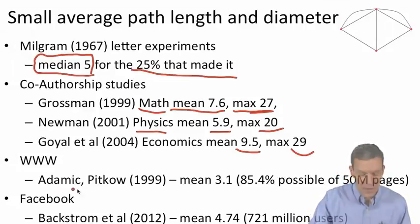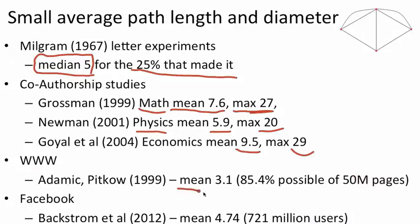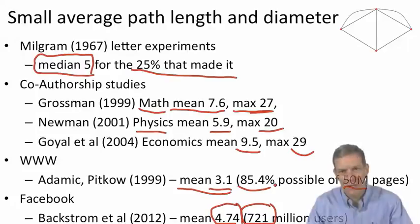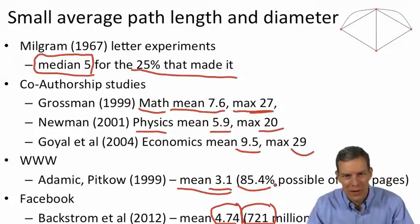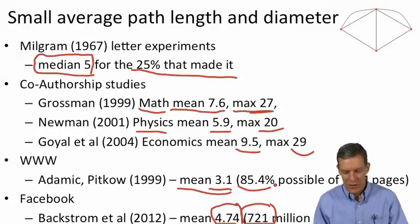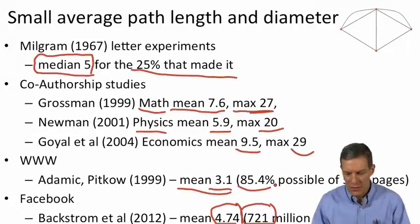There's a study by Lada Adamic and Pitkow on World Wide Web. There they found an amazing number, mean 3.1 on a giant component reaching 85% of about 50 million pages. Facebook, mean of about 4.74 recently found by Backstrom and a set of co-authors on 721 million users. So actually, when you start working with networks of that size, even trying to calculate the average path length is going to be something which is going to take some doing. You're going to have to work carefully to find algorithms to calculate these things. So there's some very interesting findings there in terms of the average path length.